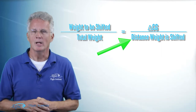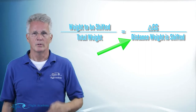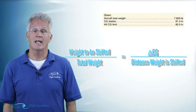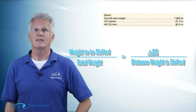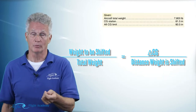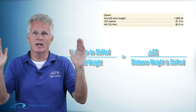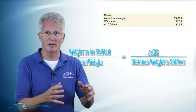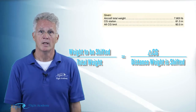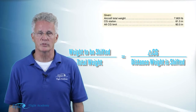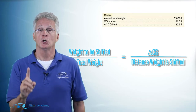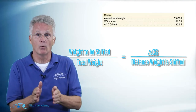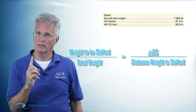Now let's use our fat cat example and see if we can plug in three knowns into this formula. Let's start with the fact that our current CG is at station 81.5, and the aft CG limit for the airplane is 80.5. I cannot fly this airplane with the CG aft of its aft limit. So not only do I want my fat cat in the back seat, but I've got to get that CG forward anyway. If you said one inch, you're correct — it's currently at 81.5 and I need it at least 80.5 or smaller, so I need to move it at least one inch.